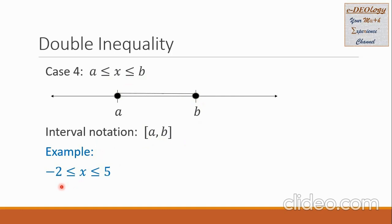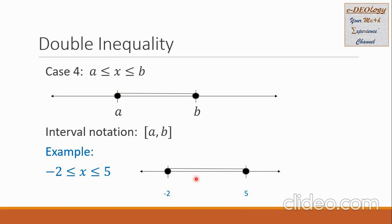Example: negative 2 is less than or equal to x and x is less than or equal to 5. On the number line, we have negative 2 on the left side and 5 on the right. We connect the two numbers and use solid dots for both negative 2 and 5. All members of the solution set are in between negative 2 and 5, including the two numbers. For the interval notation, we write the end numbers and use square brackets for both sides.